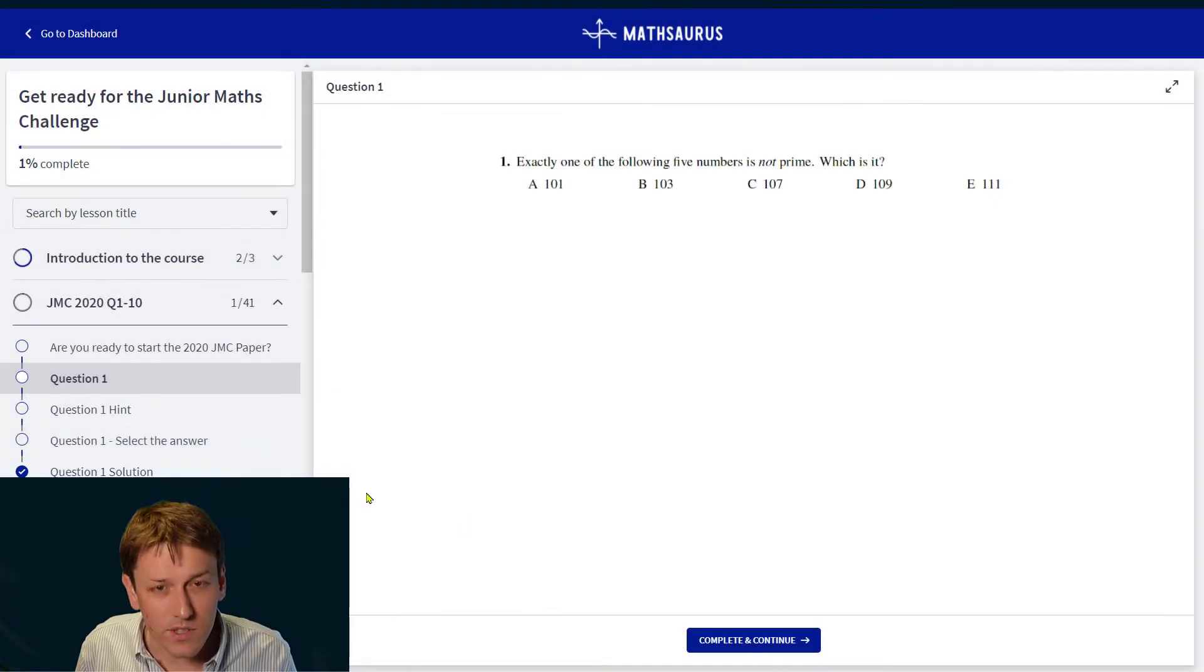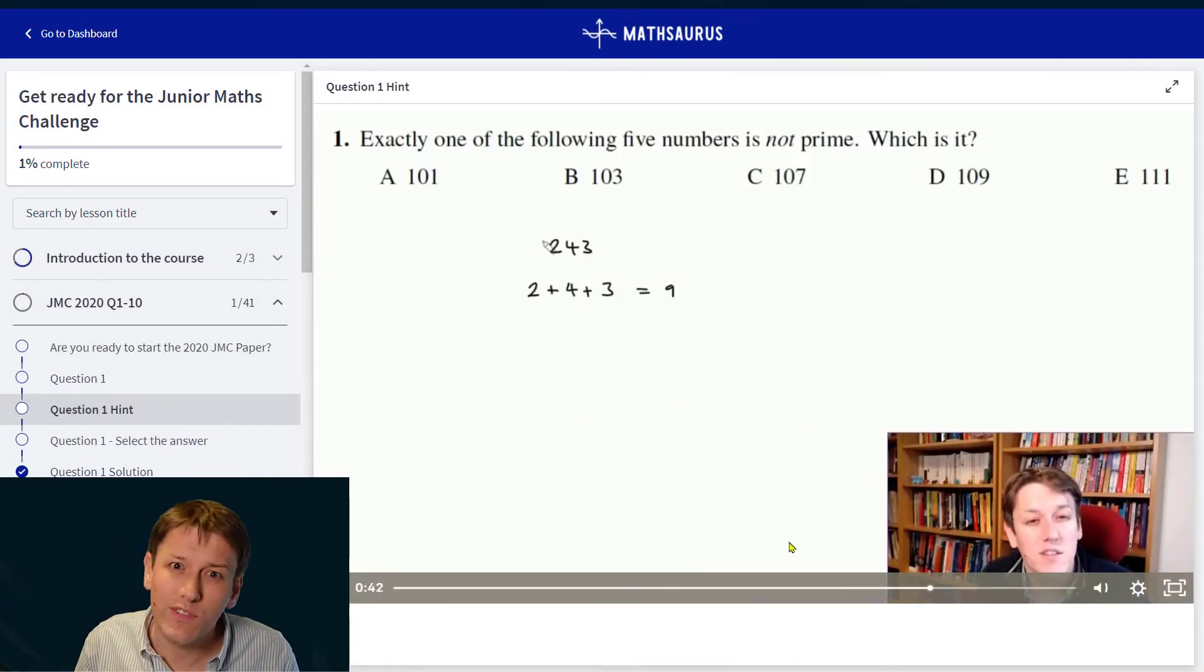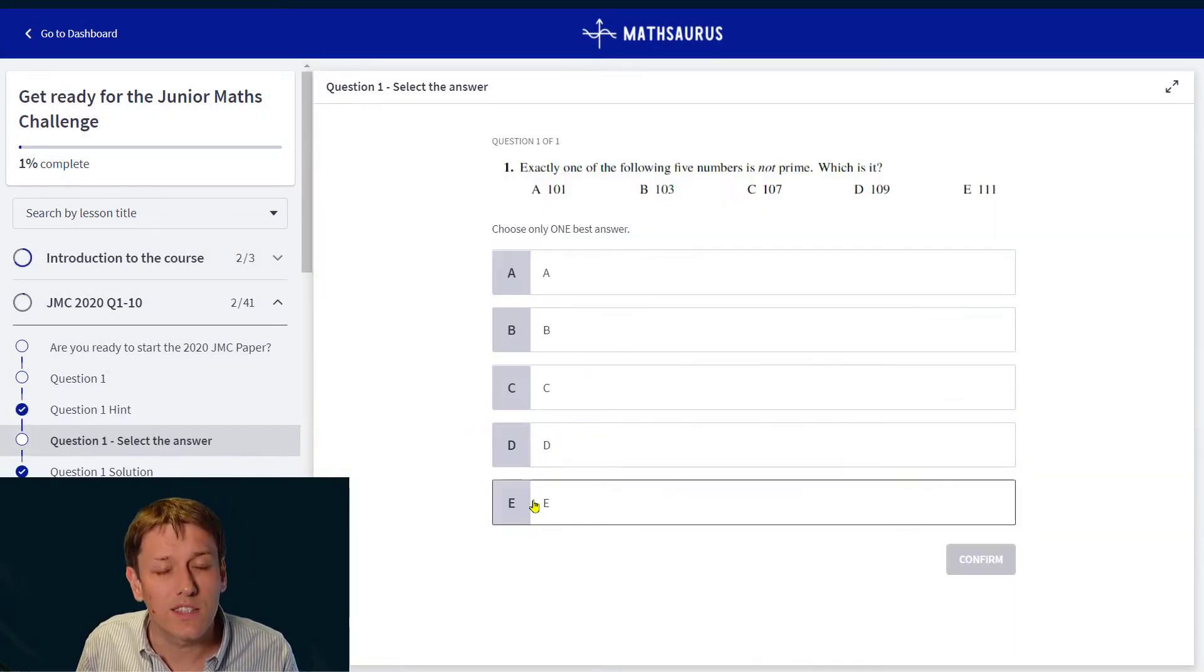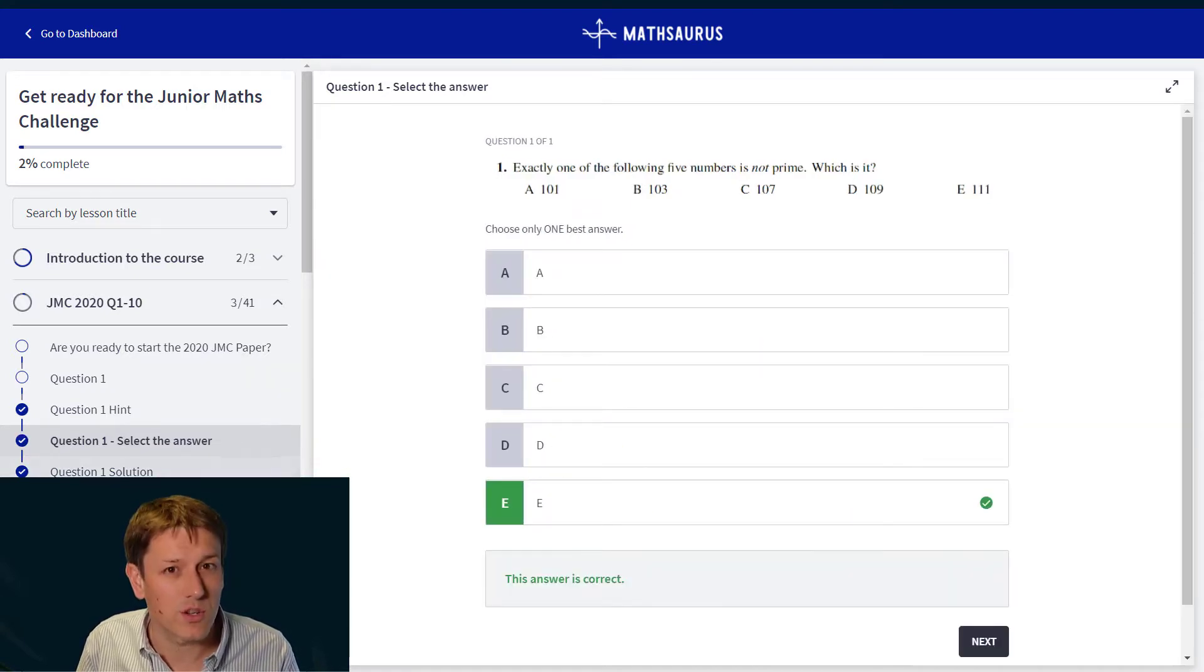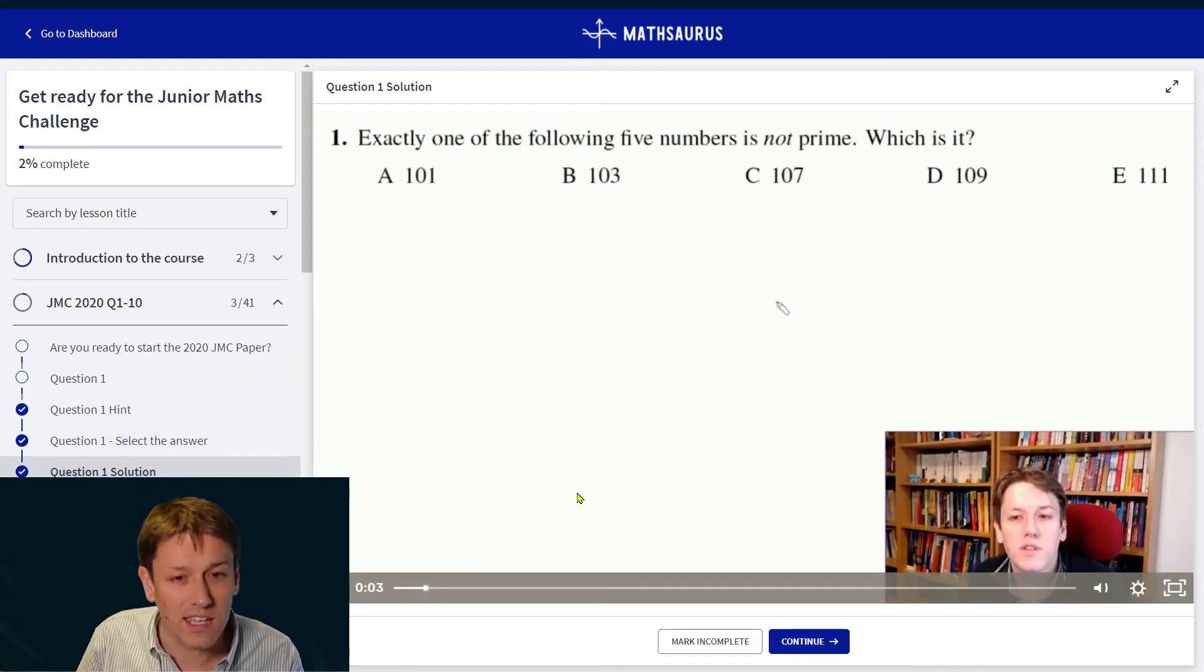I've put this entire paper as well as the 2020 paper into a totally free online course. You can sign up for that course by clicking on the link below. For each question there, I'll also give you a video hint before you get to see the full solution. That means you can have a go at the question. If you get stuck, you can have a look at the hint. You can really give yourself the best chance of getting the question right before going on to watch the solution. I really think it's the best way to prepare for the junior maths challenge or for other challenges at this age, and it's just great extension and enrichment material for any students of the same age too. So do click the link below and head over there and have a look at that course.